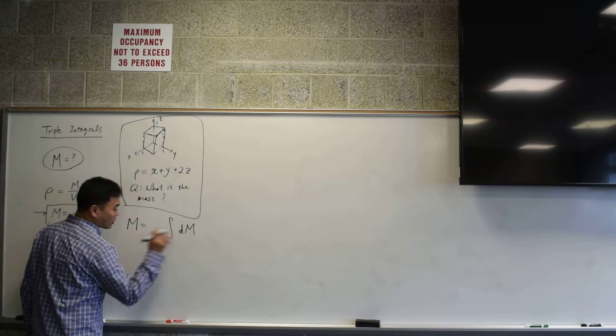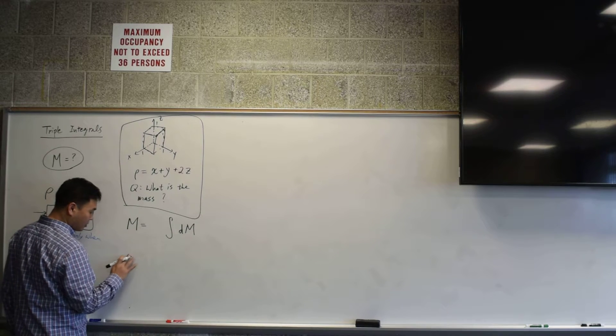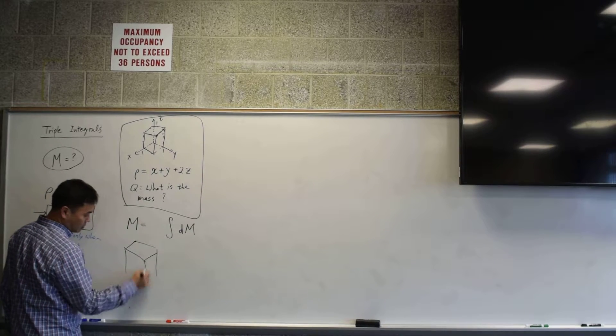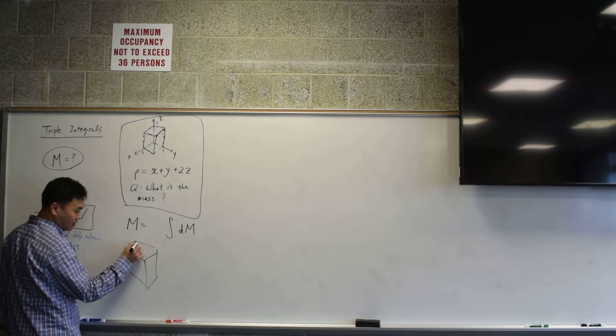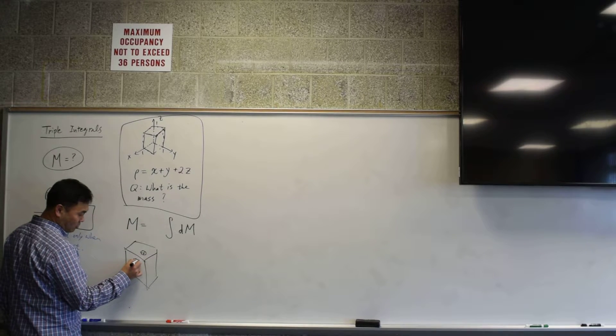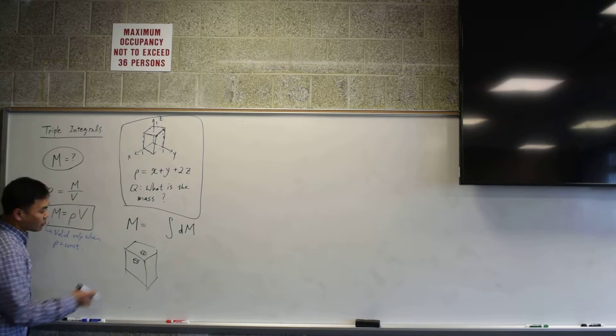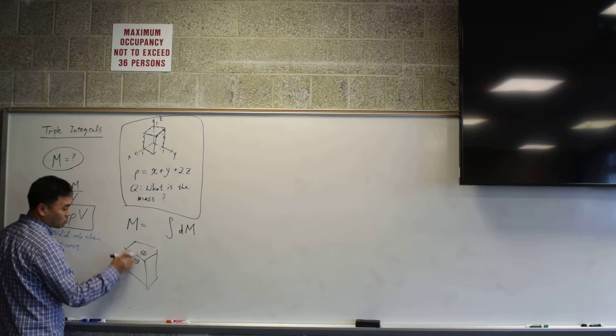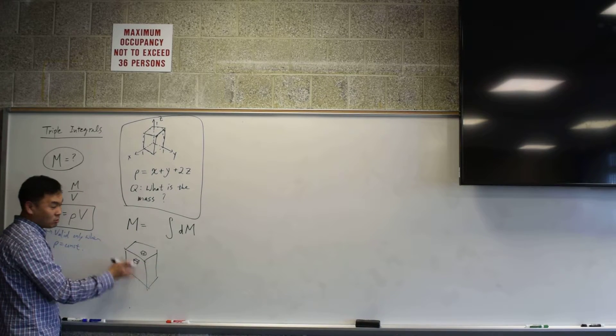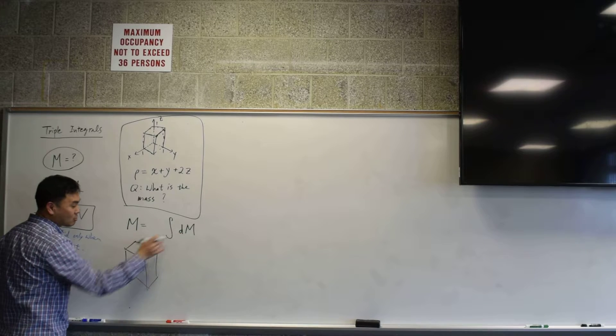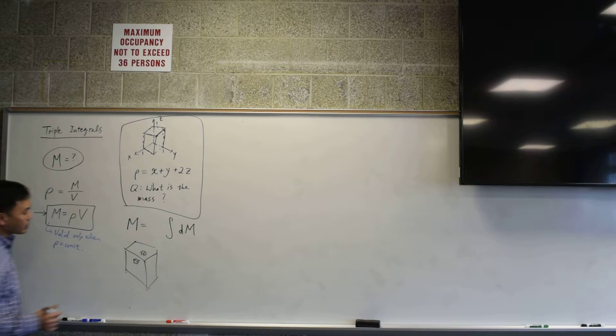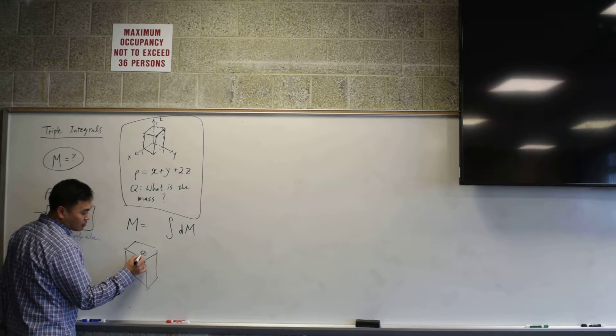And then if you think about what dm is, here's what we're trying to do. We're trying to take this cube, and we're trying to take little bits of the cube. Tiny, tiny bits of cube. And then I want to calculate the masses of each individual ones. And I add everything as we move around this cube. And the sum of those small masses will give you the mass of the entire thing. That's our plan.